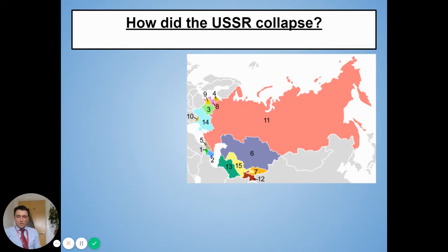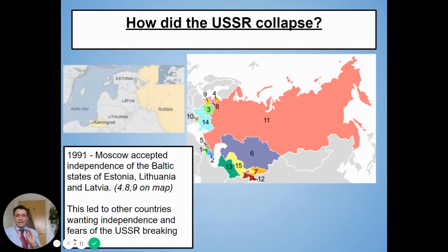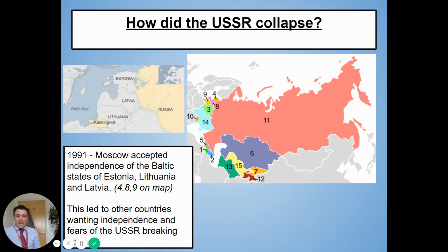The problem was that things were getting worse. This map shows the USSR — number 11 is Russia, but it also shows the smaller countries Russia had taken over to form the USSR. These countries had started to see that they could have independence as well. In 1991 Gorbachev accepted the independence of the Baltic states of Estonia, Lithuania and Latvia — references 4, 8 and 9 on the map. This led to other countries that were part of the USSR wanting independence from Russia too. For the hardline communists, the Baltic states leaving was too much to bear. It became clear that Russia would exist on its own and the USSR would break up completely unless the hardline communists did something to stop Gorbachev.